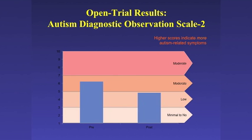Let me go over the results from our open trial — we're still analyzing our RCT results. Looking at ADOS severity scores, pre on the left and post on the right, we see our children moving from a moderate range of severity to a low range. For our randomized control, we had a smaller group of five to ensure the intervention and curriculum was feasible, so we were underpowered, but we're seeing a nice trend, and our initial RCT analyses are showing the same results — very encouraging.